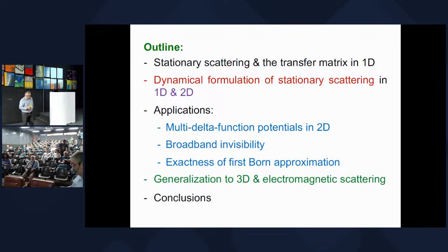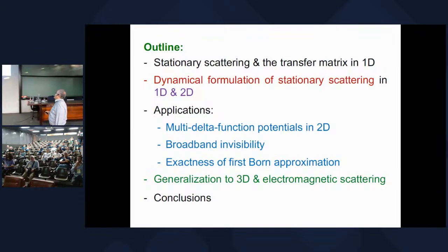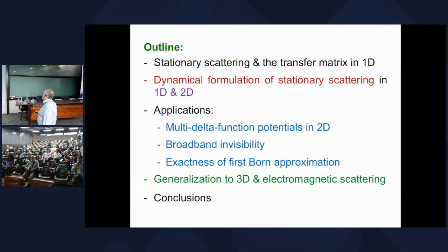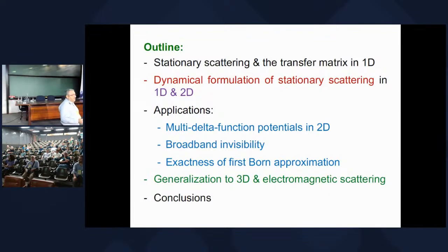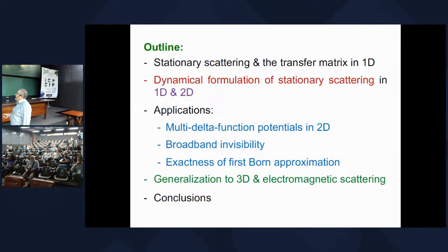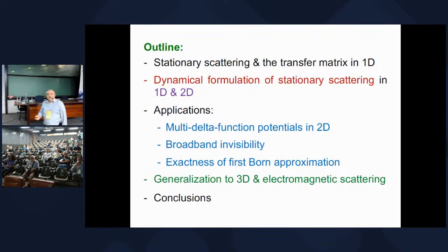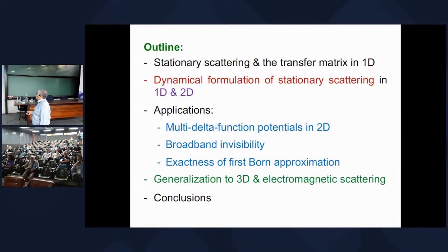The outline: I'll begin with a straightforward introduction to stationary scattering and the notion of the transfer matrix in one dimension. I'll talk about what I mean by dynamical formulation of stationary scattering in one dimension and then extend it to two dimensions. This is the only fundamental alternative to the standard formulation of scattering theory based on the Lippmann-Schwinger equation. I will then discuss three specific applications and summarize the generalization to three dimensions, electromagnetic scattering, and conclude with some comments.